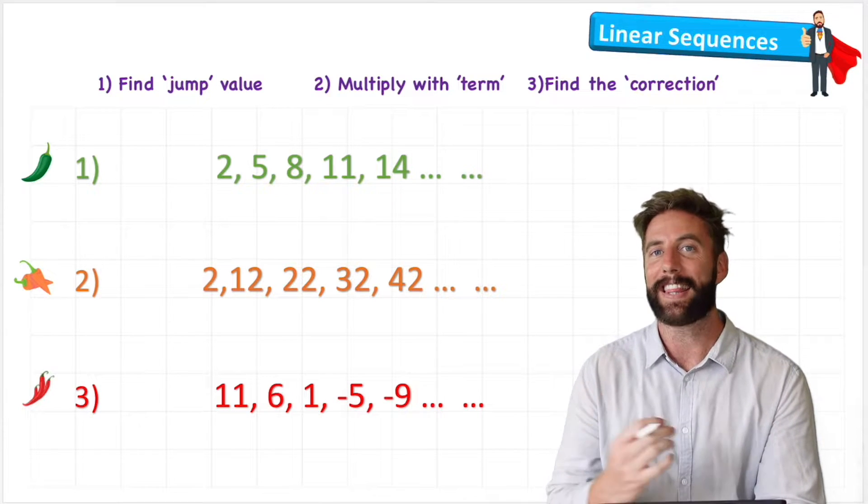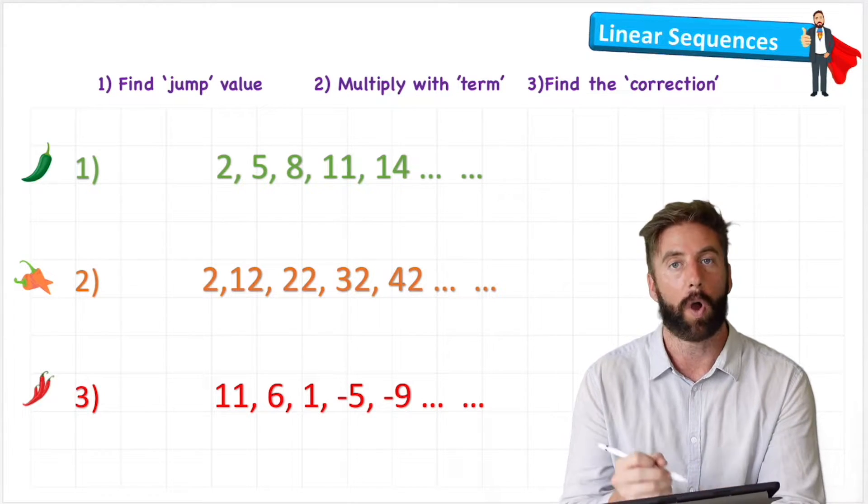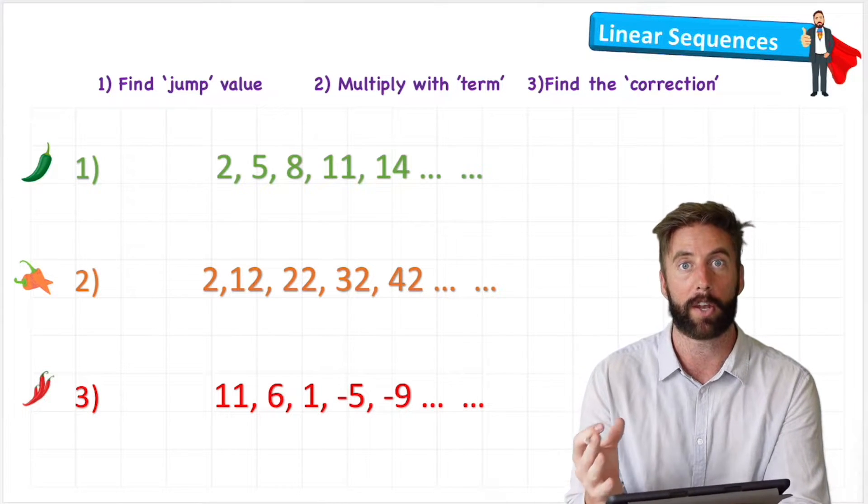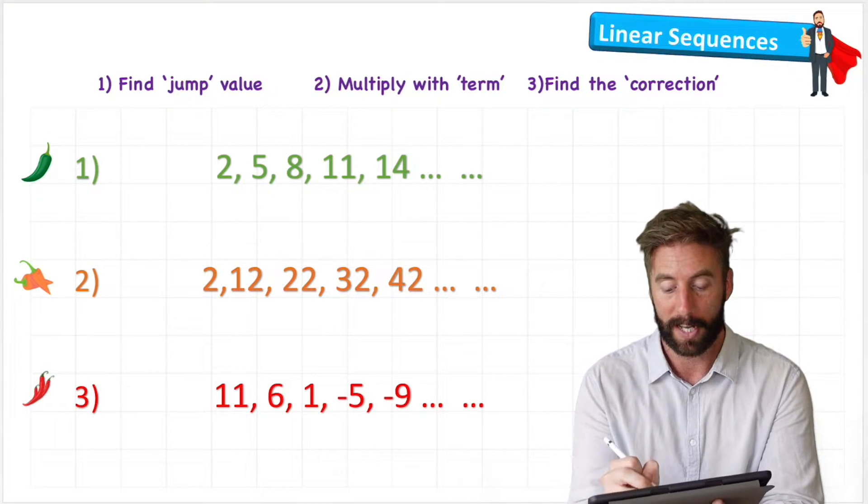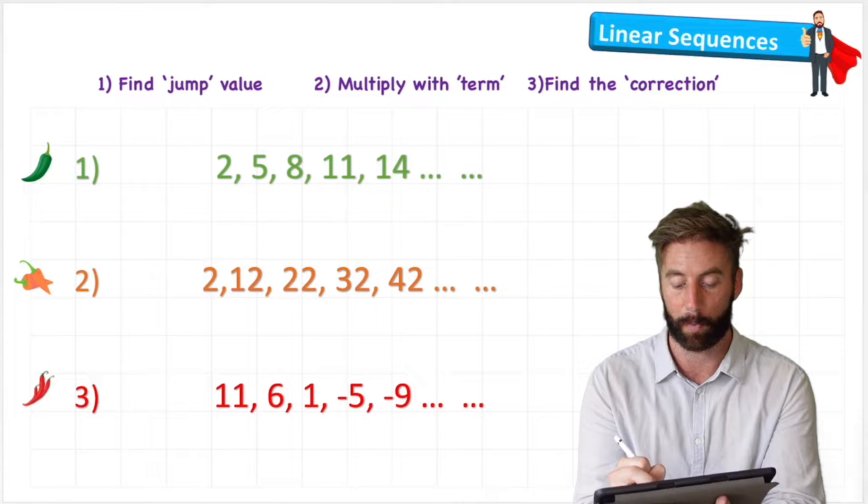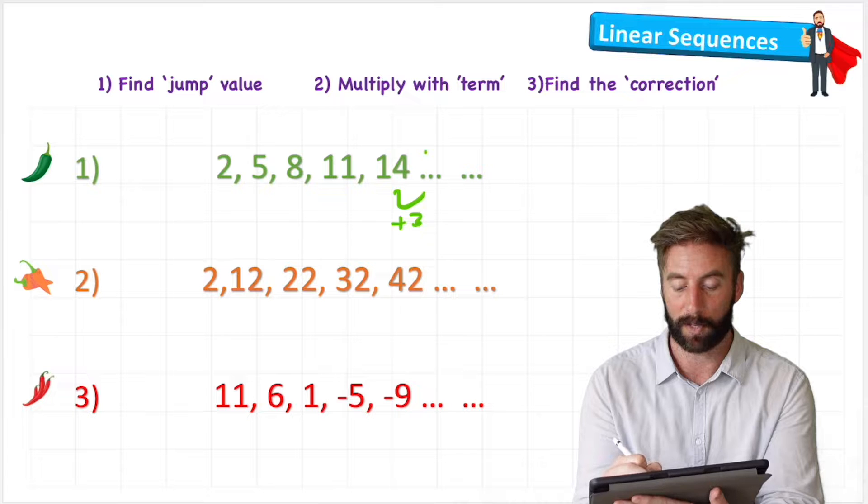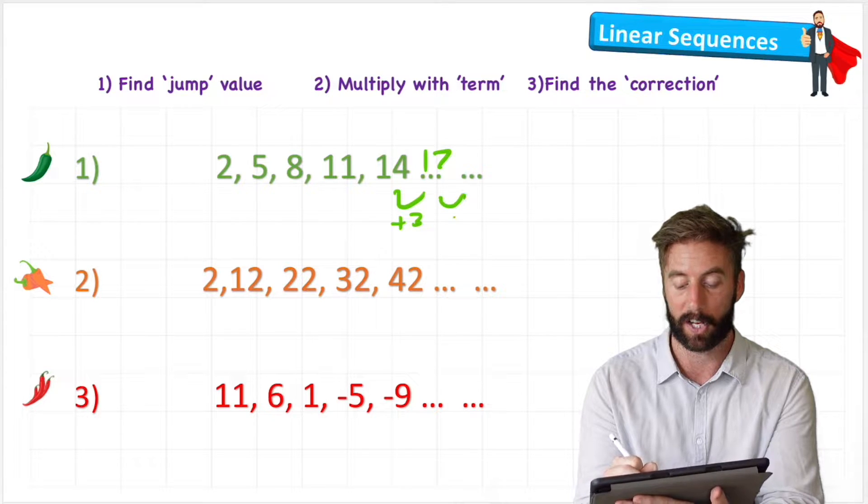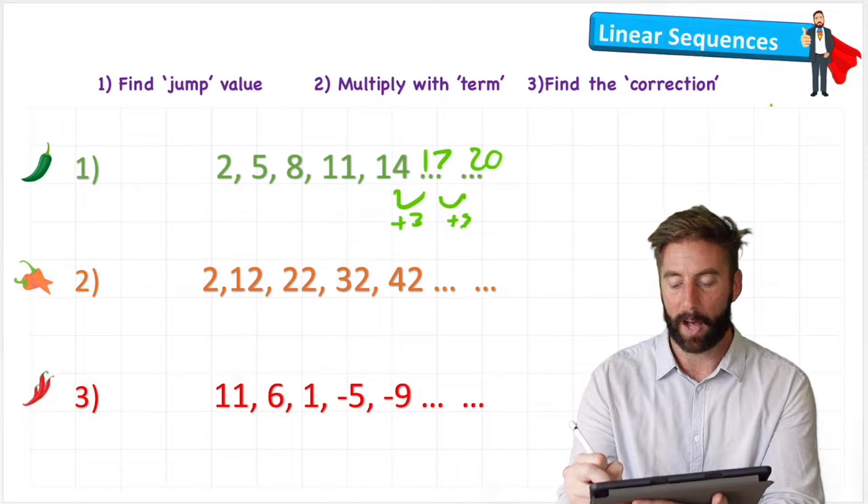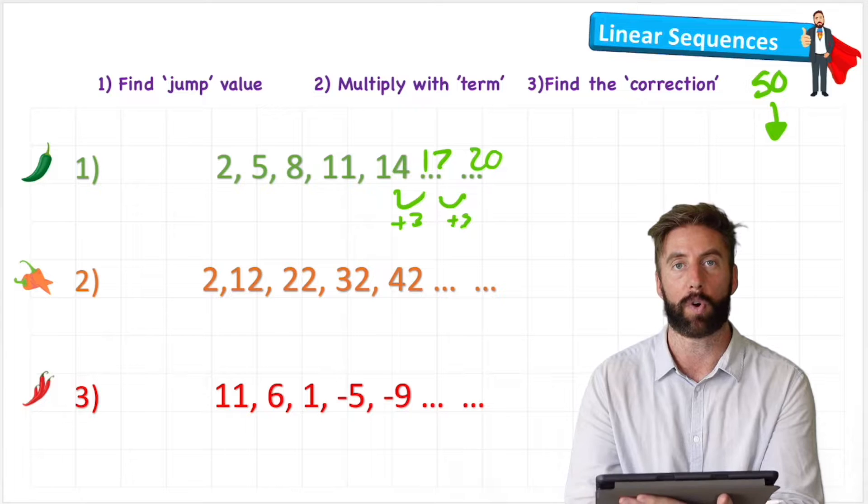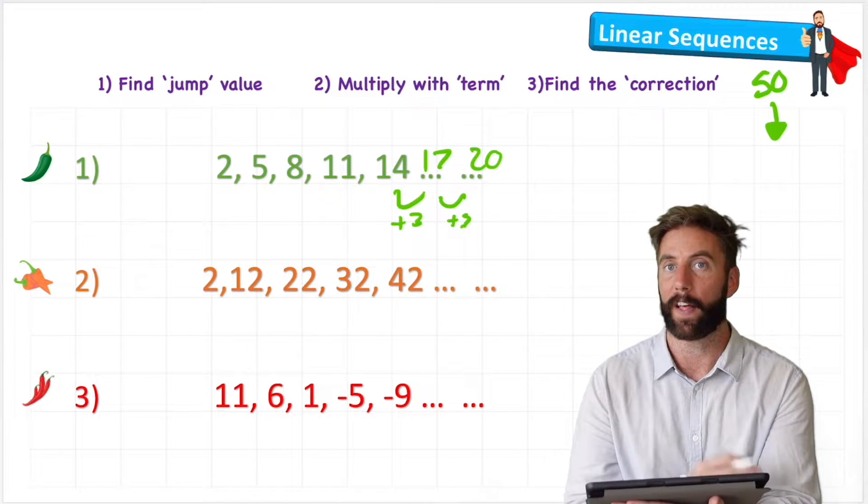And what does finding the nth term of a linear sequence mean? Well, we can use the sequence to work out the next few numbers. For example, I know that if the gap between the numbers is 3, this next number will be 17 because I can just add 3 to 14, which will be 17. But what if I wanted to find out what the 50th term of this sequence was? Well, I need a formula, and that's what we're going to look at today.